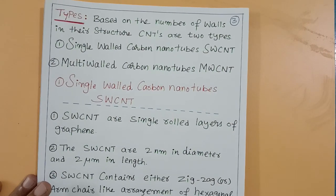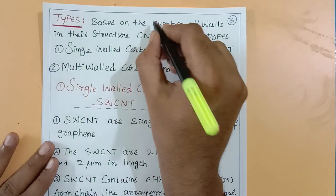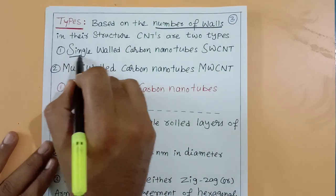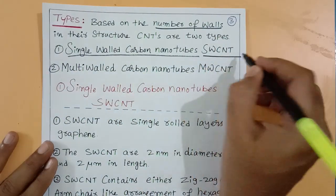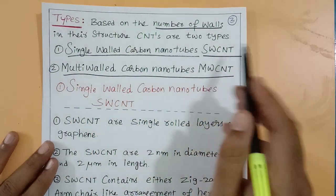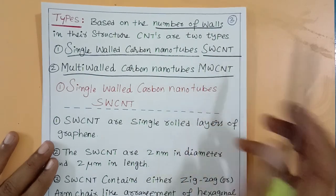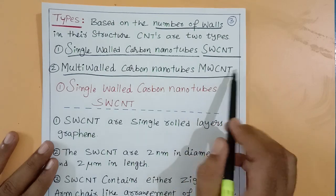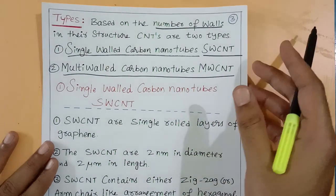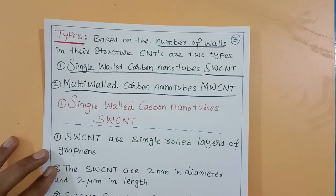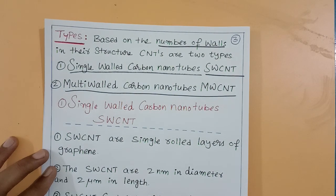Now for the types of carbon nanotubes. Based on the number of walls, carbon nanotubes are classified into two types: single-walled carbon nanotubes (SWCNT) and multi-walled carbon nanotubes (MWCNT). SWCNT means single-walled carbon nanotubes; MWCNT means multi-walled carbon nanotubes.